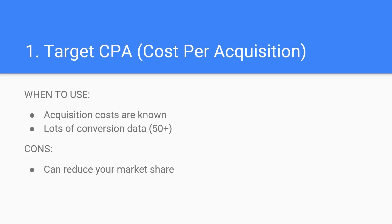First off, we've got the target cost per acquisition, or TCPA, bidding strategy. Target CPA is a strategy that you can use if you want to optimize for conversions. If driving conversions is your primary goal, selecting TCPA bidding will focus on trying to convert users at a specific acquisition cost. With this method, Google Ads will automatically set your bids on each campaign based on your CPA. While some conversions may cost more, others may cost less to even out and align with your conversion acquisition costs.